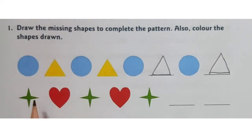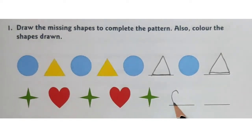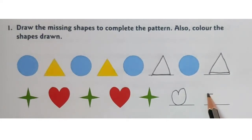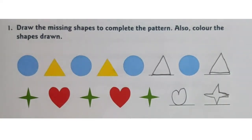Let us move on to the next one. The first one is star. Second is heart. Again, star, heart. So, after star we get heart. Here also, after star we get a heart. Draw neatly and here, draw a star. And colour them, children.